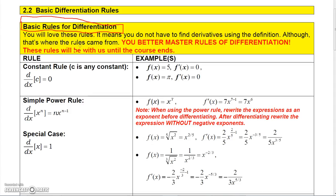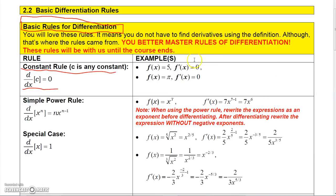The first rule I want to talk about is the constant rule. The constant rule basically says if you take the derivative of any constant function or constant, you're going to get zero. This makes sense graphically because a constant function is a horizontal line and the slope of a horizontal line is always zero. So if you were given f(x) = 5, the derivative of that would be zero.